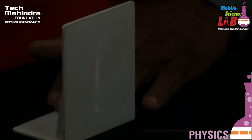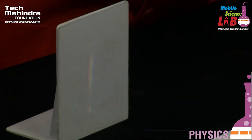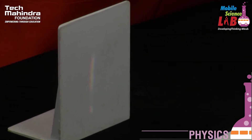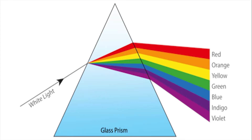This is possible because the wavelengths of different colors are different. Since the velocity of the light waves are going to be different in different media, the red light bends less when it is coming out of the glass to the air, whereas the violet light ray bends more.